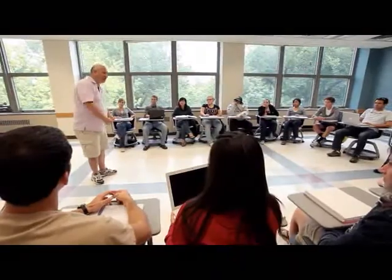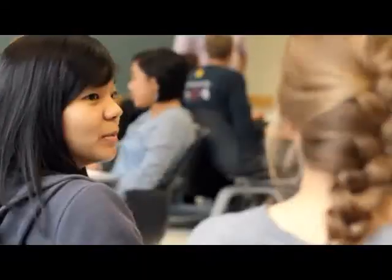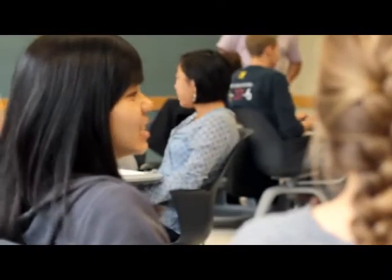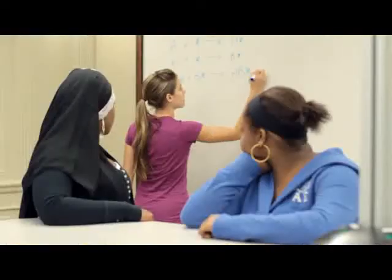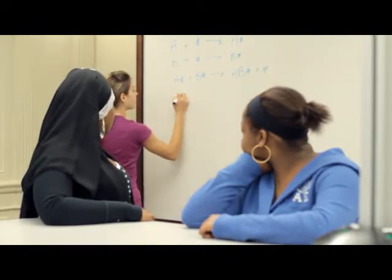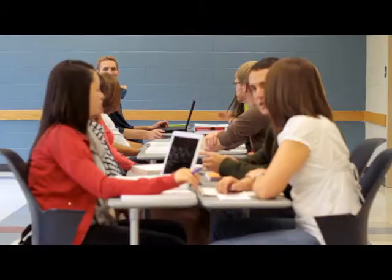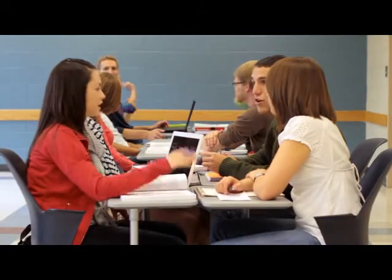The ideal classroom configuration would be one with a lot of flexibility where students can see each other and discussion is possible. Another feature of the ideal classroom would be to have lots of public surface for writing — writing surfaces that have the same kind of flexibility that the seating ought to have.